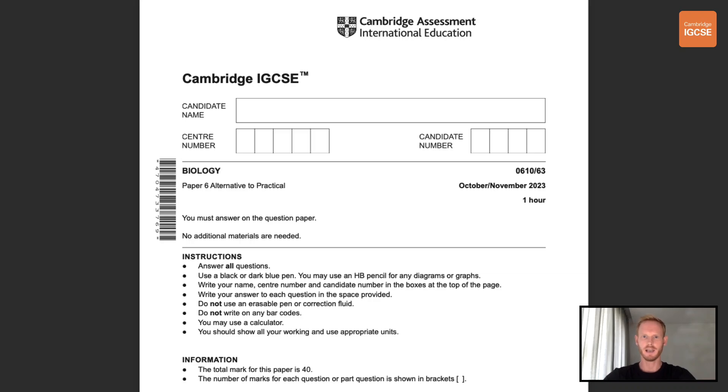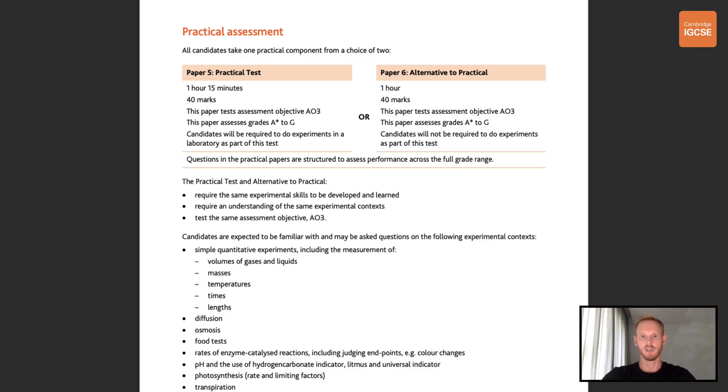Hello and welcome to another complete Cambridge IGCSE biology lesson. This one will be breaking down paper 63, one of the alternative to practical papers from the 2023 October-November exam series. Now I understand that every paper is different, but given that they're all structured in the same way and ask the same kind of questions, I still consider practicing past papers by far the best way to prepare. Now before we begin, I have a couple of things to mention.